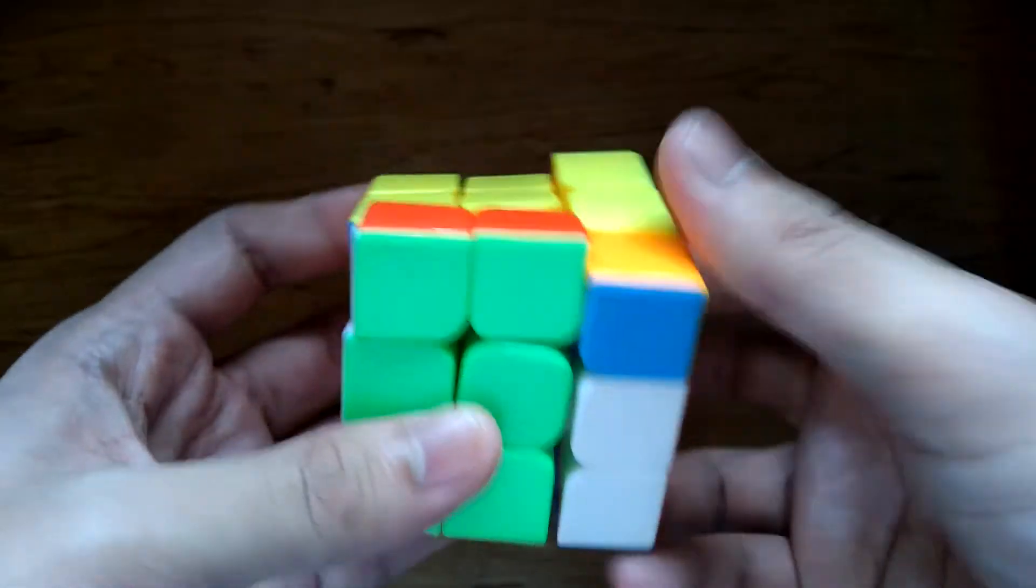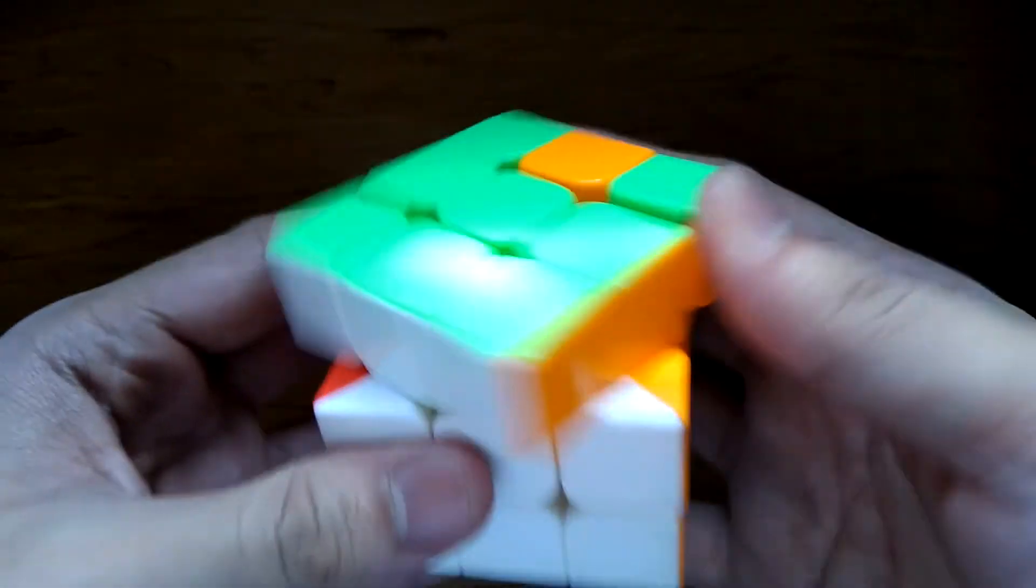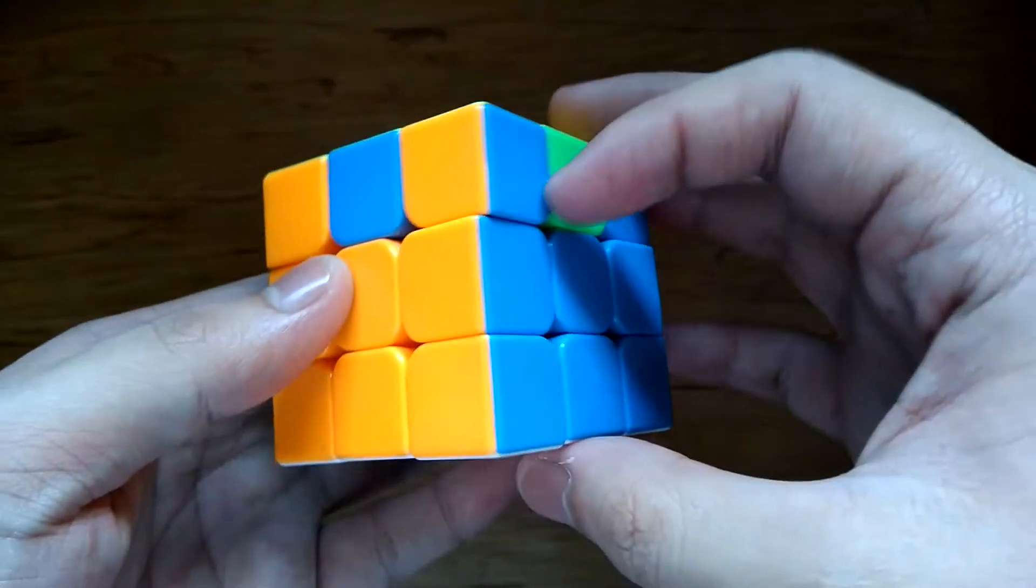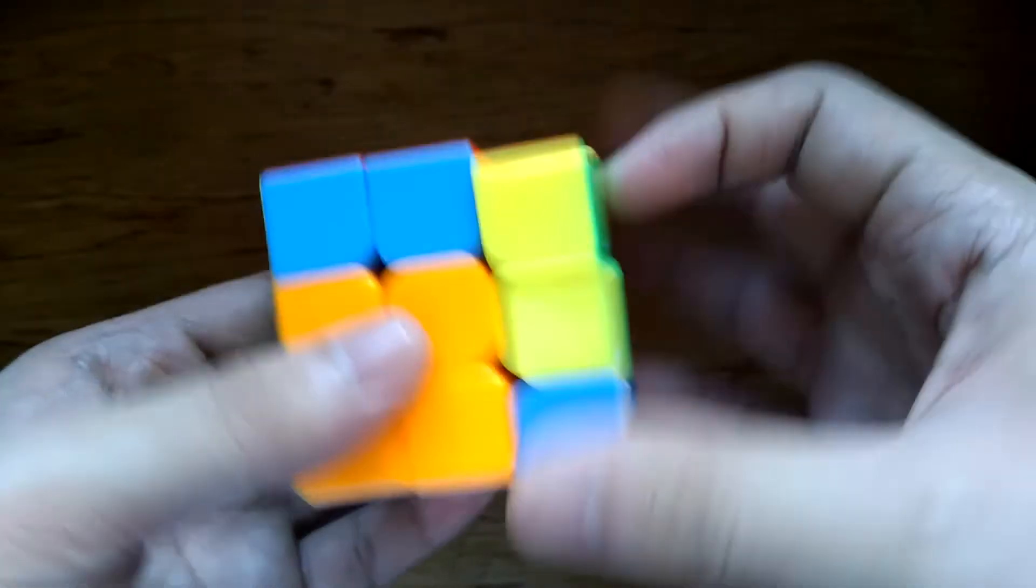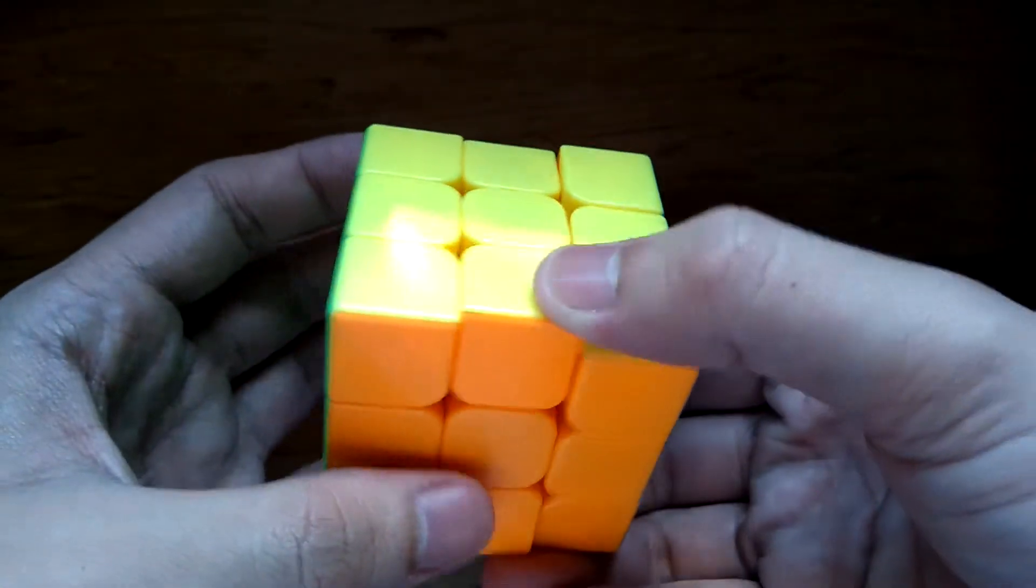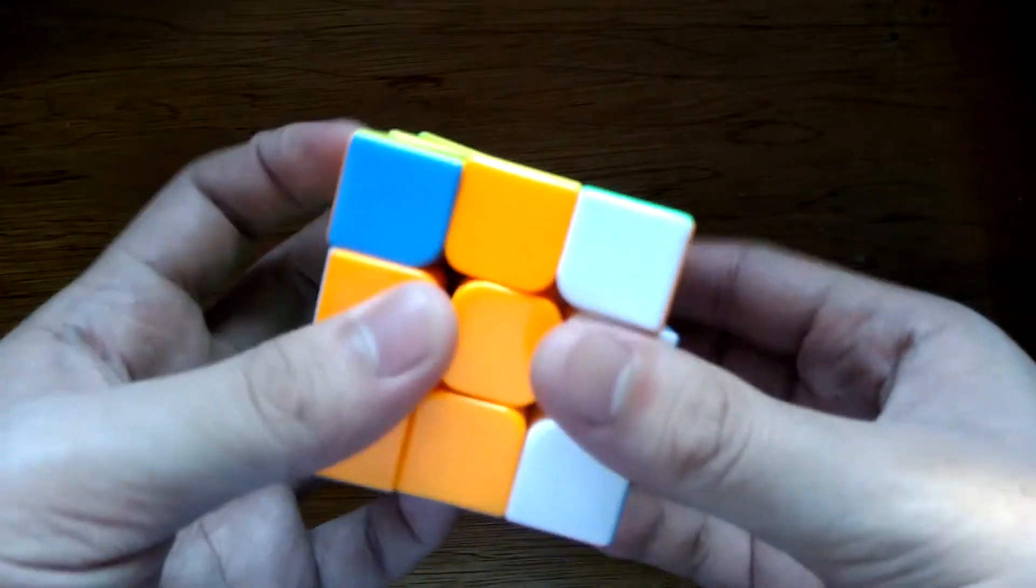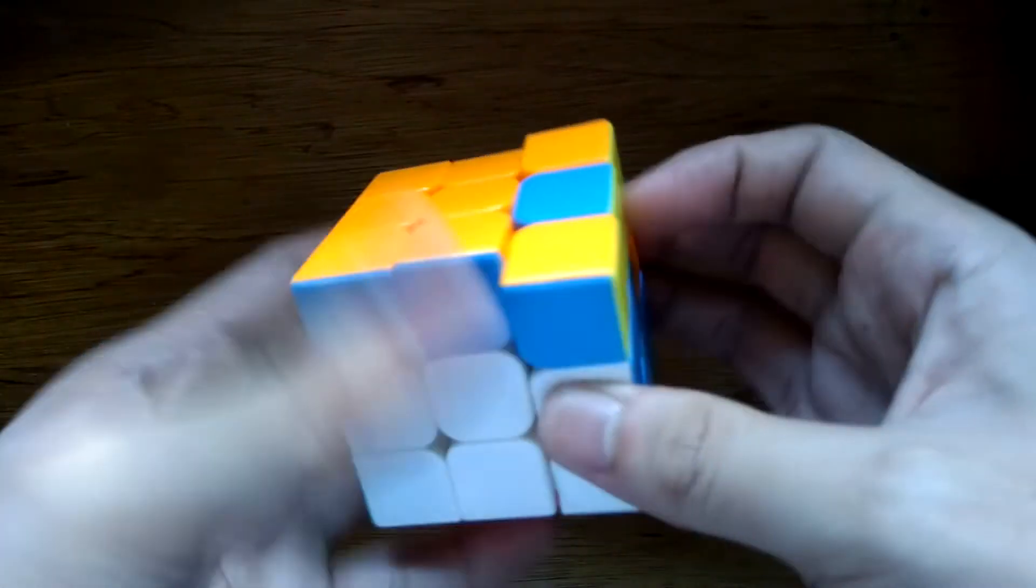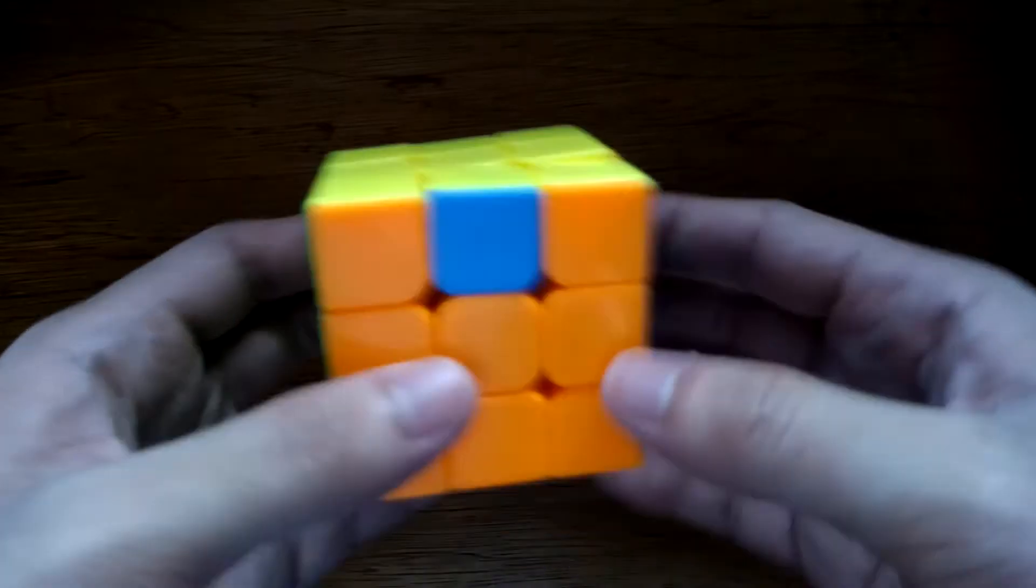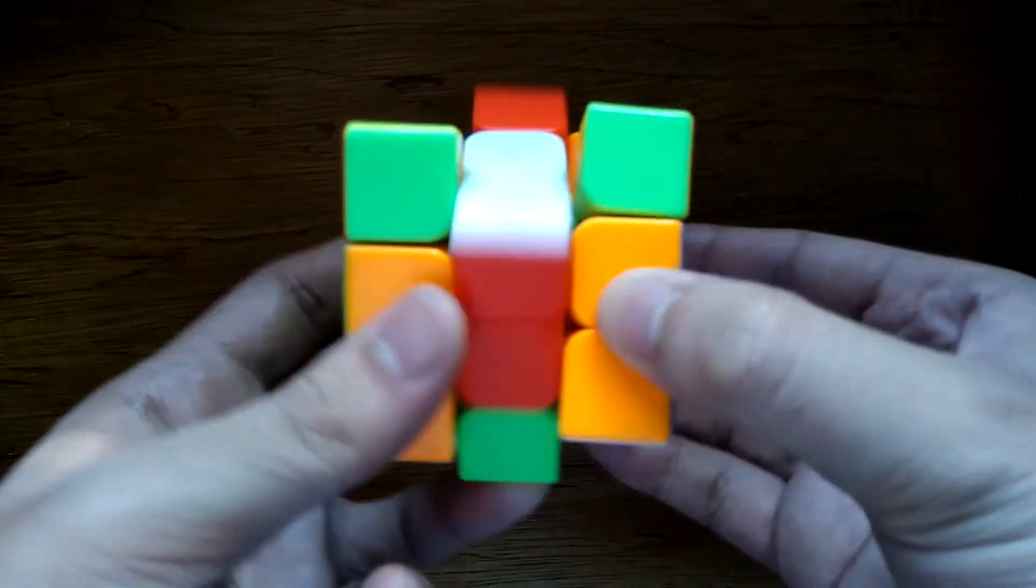The final stage involves moving the pieces of the top layer while preserving their orientation. There is a total of 21 algorithms for this stage. They are distinguished by letter names, usually based on what they look like with arrows representing what pieces are swapped around.